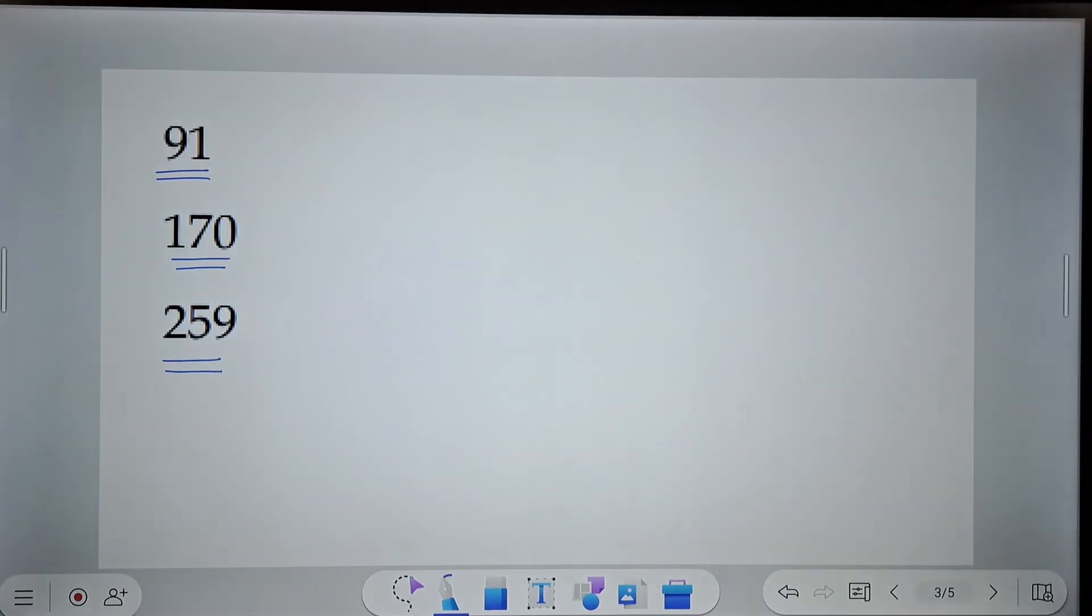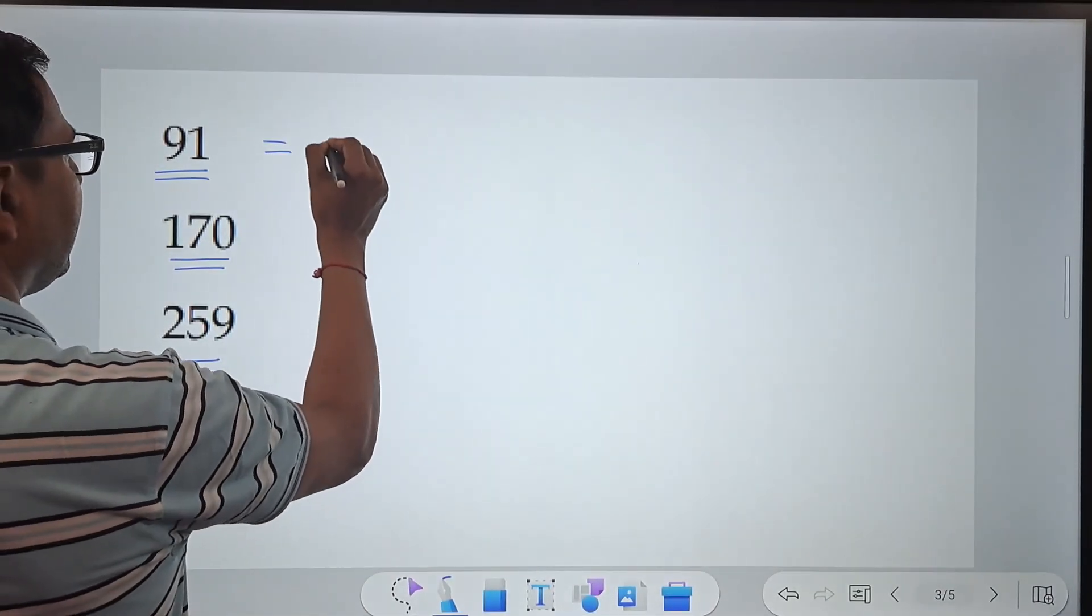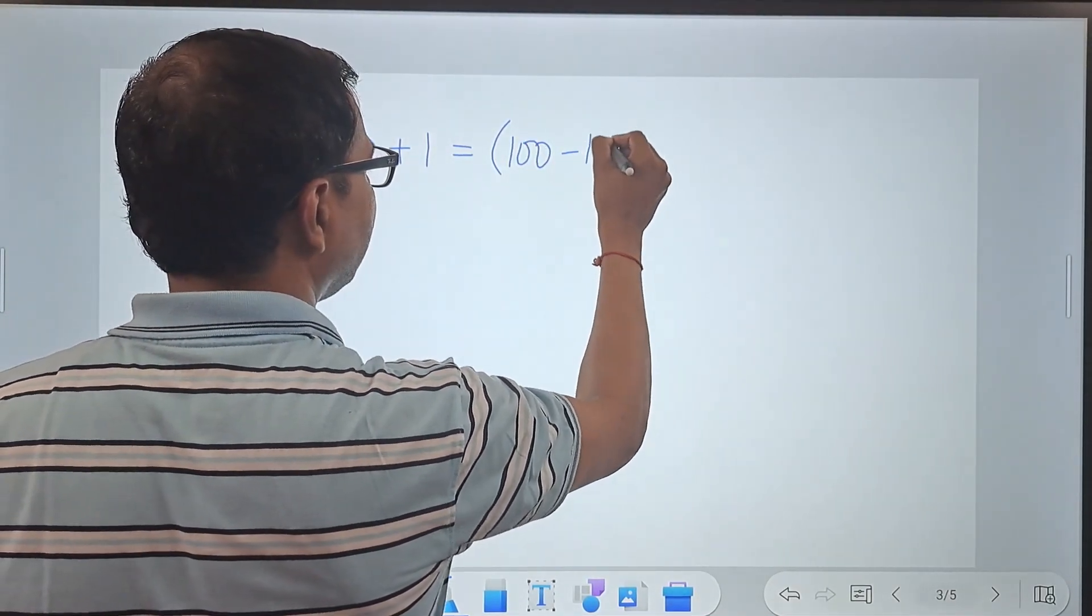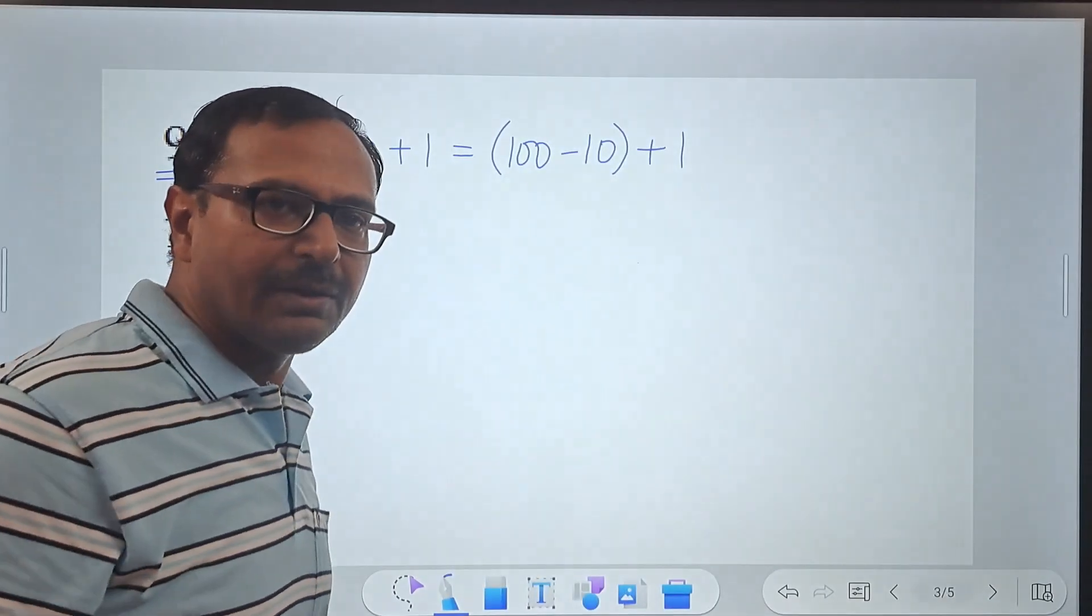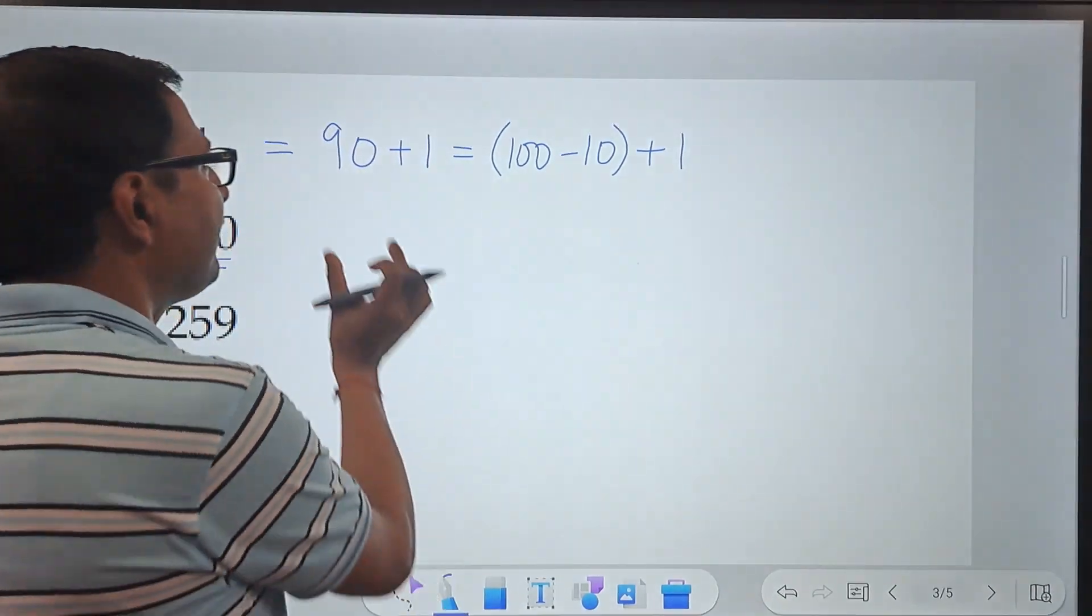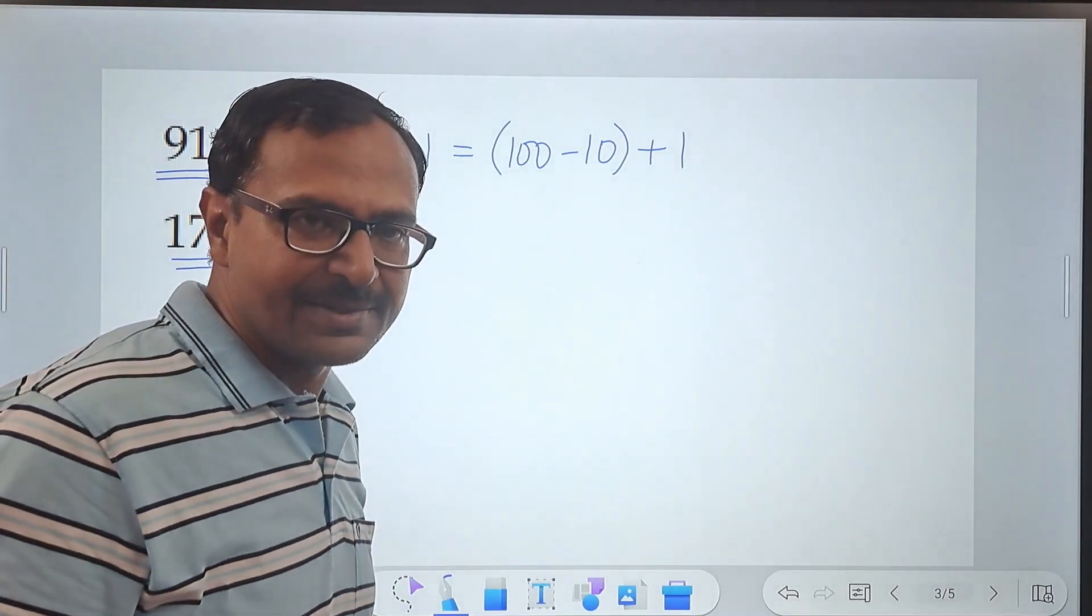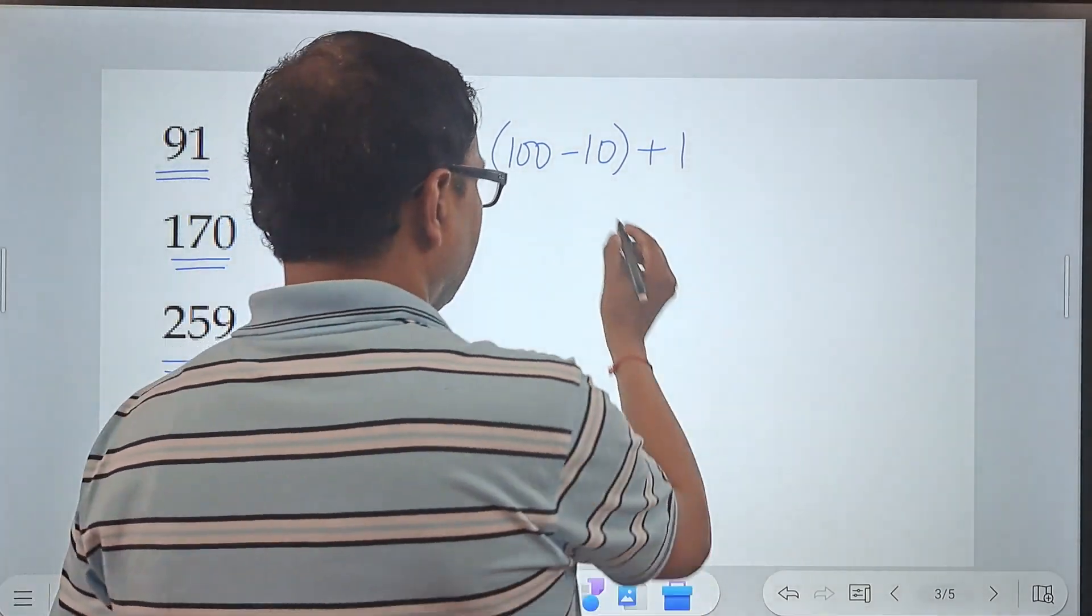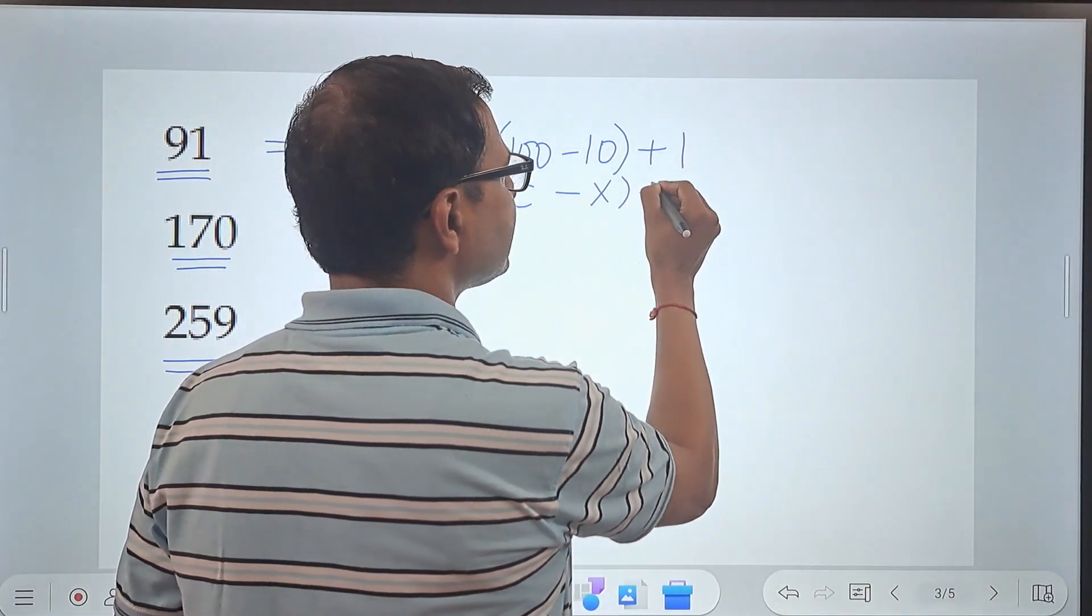Let's take the first example in which I am going to take up 91. 91 is basically 90 plus 1, which I can write as 100 minus 10 plus 1. Why did I do that? Because in Roman numerals, we have an alphabet for 100, alphabet for 10 and alphabet for 1, but we don't have an alphabet directly for 90. My intention is to convert them into 1, 10, 100 likewise. Once you have done that, 100 minus 10. 100 is actually C and 10 is X. So, C minus X plus I.